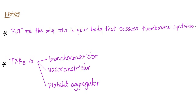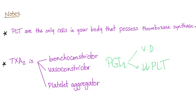Thromboxane A2: bronchoconstrictor, vasoconstrictor, platelet aggregator. Prostacyclin, also known as prostaglandin I2: vasodilator and inhibits platelet aggregation.